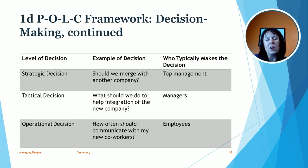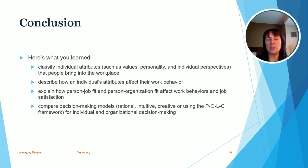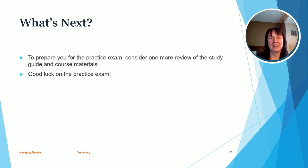Now let's look at our conclusion. We discussed individual attributes such as values, personality, and individual perspectives, and how those impact the workplace and work behavior. We talked about person-job fit and person-organizational fit and how those impact behaviors at work. We also looked at the POLC framework and decision-making models such as the rational decision-making model. To prepare for the practice exam, I recommend reviewing the material again, especially anything you found challenging. Once you review that material, you should be all set to take the practice exam — good luck!